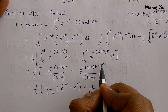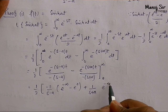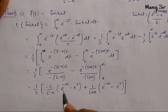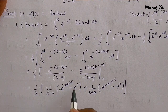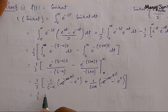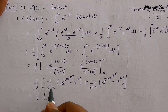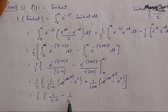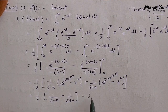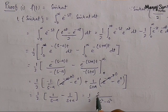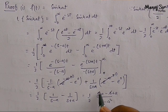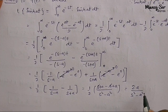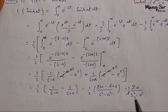Putting the upper limit: as t goes to infinity, e to the power minus infinity equals 0. Putting the lower limit: t equals 0 gives e to the power 0 equals 1. So this becomes one half times: minus 1 times minus 1 upon s minus a, which is 1 upon s minus a, minus 1 upon s plus a. Taking LCM as s squared minus a squared, the numerator becomes s plus a minus s plus a, which gives 2a upon s squared minus a squared. Now this half and 2 cancel, so this is a upon s squared minus a squared.